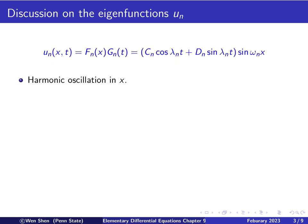Now let's have a short discussion on the eigenfunctions u_n. Each eigenfunction is a product of two functions: one depending on x and the other depending on t. Looking at the function depending on x, it's just sine of omega_n times x, which is a harmonic oscillation in x.